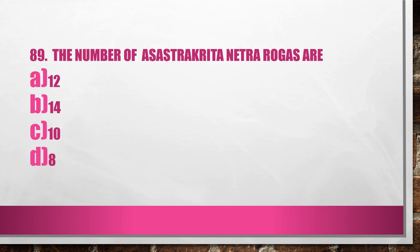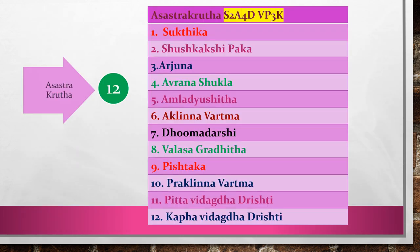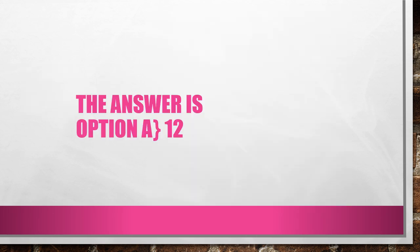Question 89. The number of Ashastrakrada Netra Rokasar: A. 12, B. 14, C. 10, D. 8. Classification of eye diseases based on surgical treatment: Bethea 5, Chethea 11, Lekhea 9, Vyadhana 15, Yakpya 7, Ashastrakrada 12, Asathya 70. Ashastrakrada are 12 in number. We can use the code S2A4DVP3K. These are the 12 Ashastrakrada Netra Rokas. So the answer is Option A, 12.